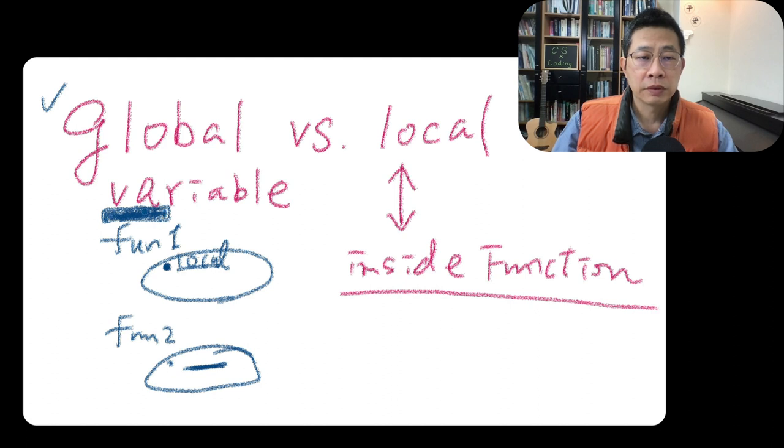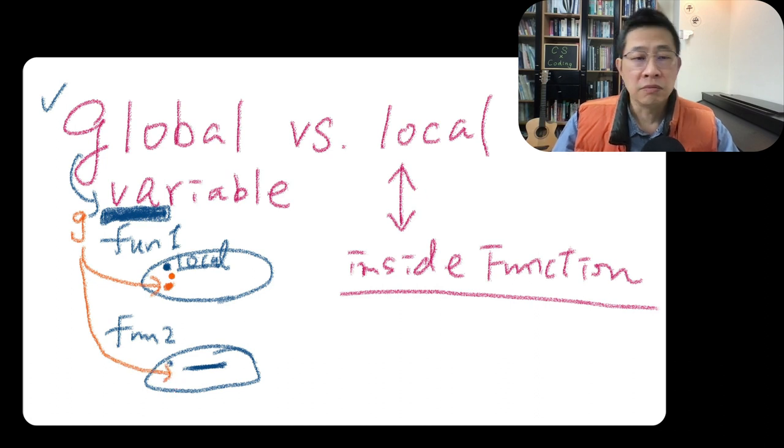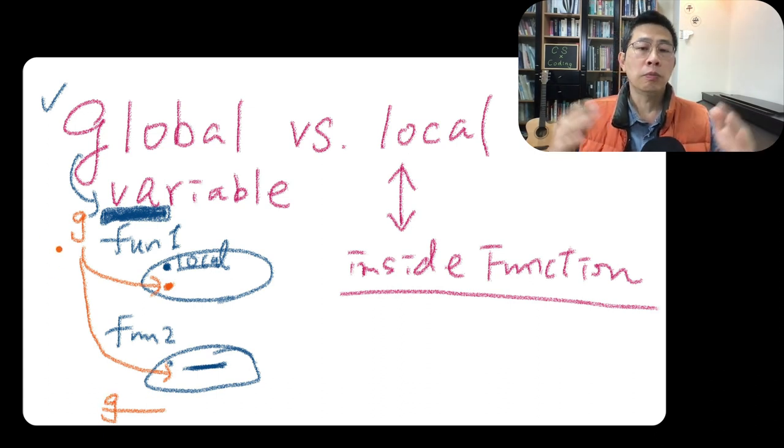I just use a rectangle to indicate a variable name, which is a global. And this name, let's suppose it's a G, as a global. And you want to kind of use this G anywhere. Maybe in function one, maybe in function two, maybe in your main program. In this case, your G actually is valid for all places.